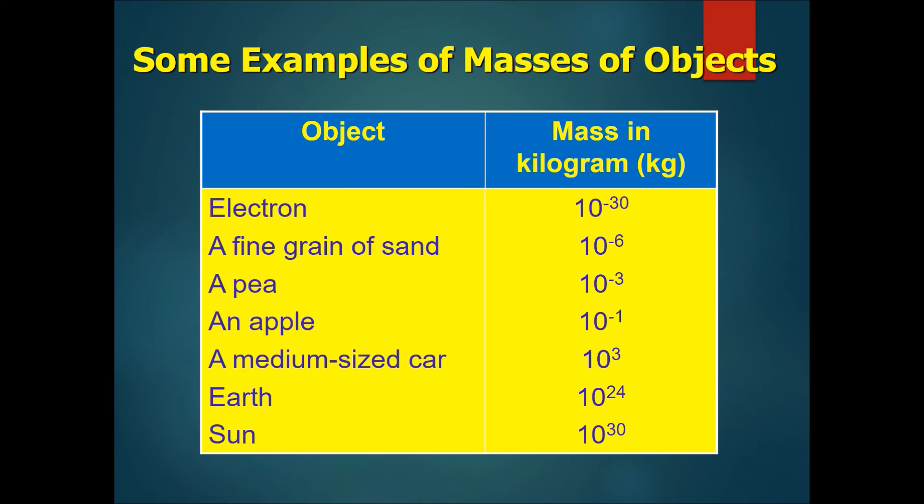Here are some examples of the different masses of objects. An electron, one of the smallest objects known to man, has a mass of 10 to the power of minus 30 kg. One fine grain of sand is 10 to the power of minus 6. A pea will be 10 to the power of minus 3. An apple will be about 10 to the power of minus 1, which is about 0.1 kg. A medium-sized car will be 10 to the power of 3, which is about 1,000 kg. The earth will be about 10 to the power of 24. And the sun will be about 10 to the power of 30.